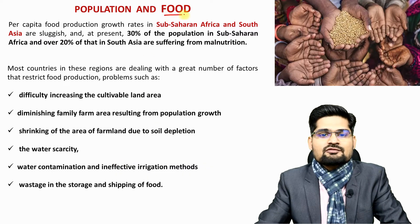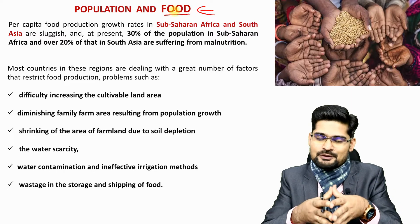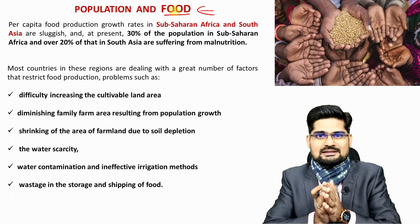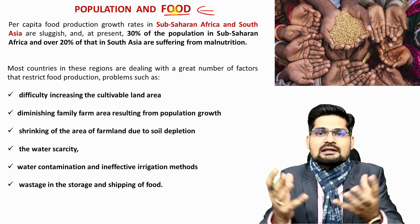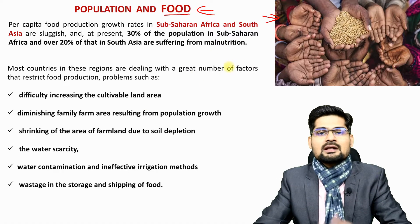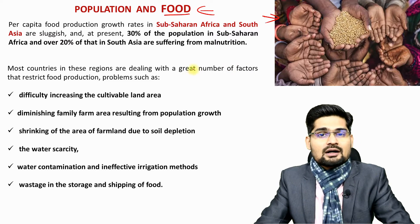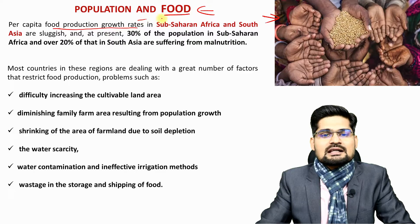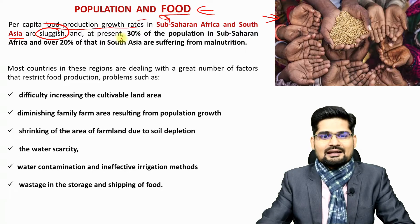Similarly, if you observe population and food, which was primarily talked about in Malthusian theory of population — if you haven't watched it, please go to the playlist. We are talking about population and its food requirements: how much is the carrying capacity of the planet, and how much population would get food in a convenient manner. Food is going to be talked in terms of security and insecurity around the world. Sustainable development goals talk about zero hunger, zero poverty and several such issues. Per capita food production growth rates in sub-Saharan Africa as well as South Asian countries are already sluggish.